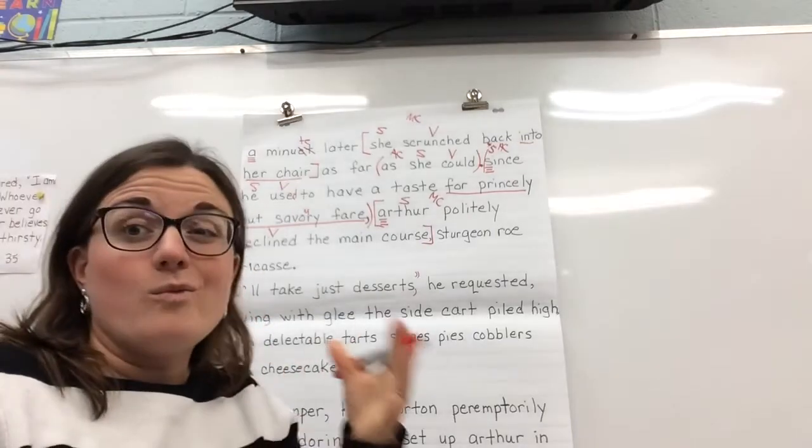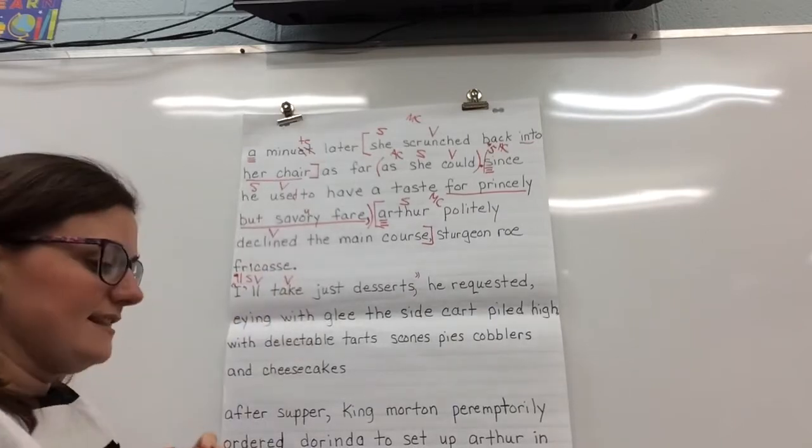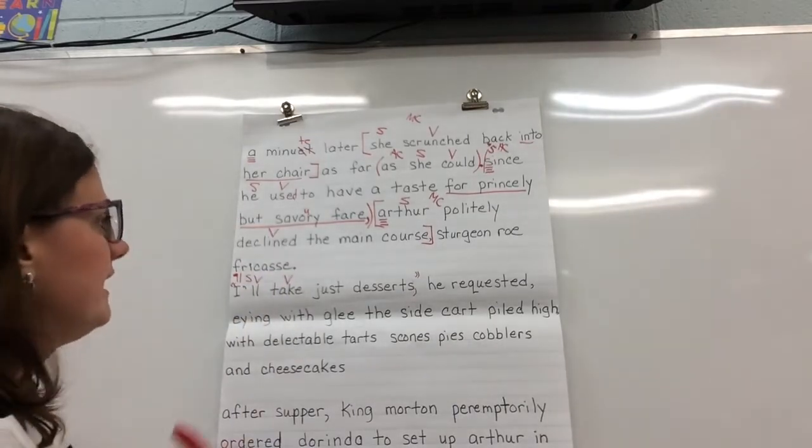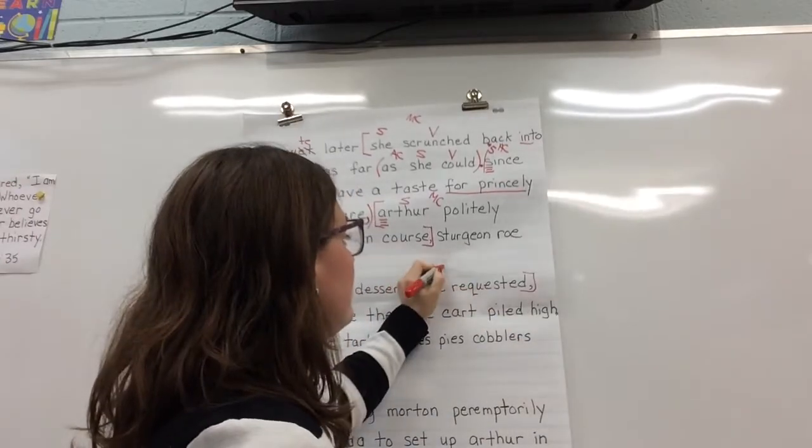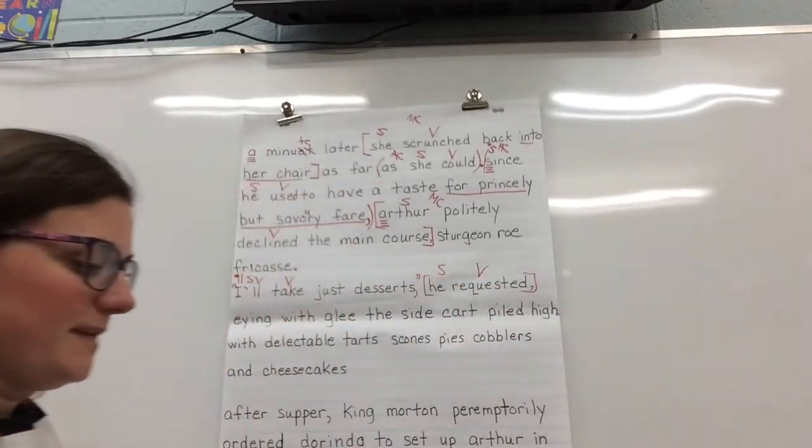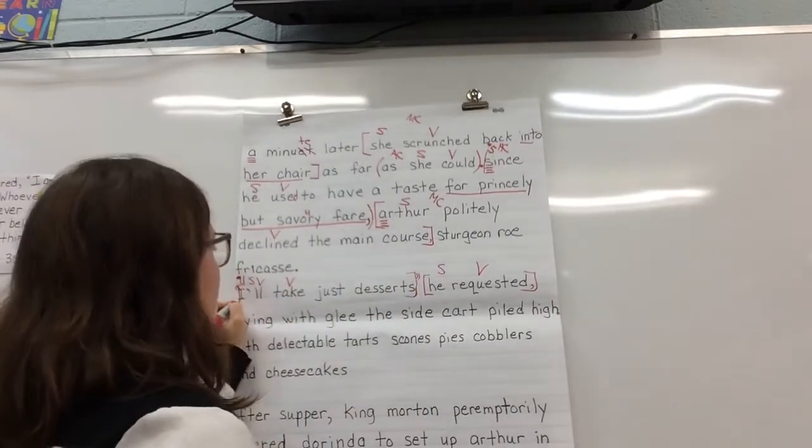So let's find. Now, I'll is I will. So that's actually going to be subject, a helping verb. And then take is our verb there. And then we've got another main clause. He requested, right? Requested is the verb. He is the subject. Main clause here in the beginning.